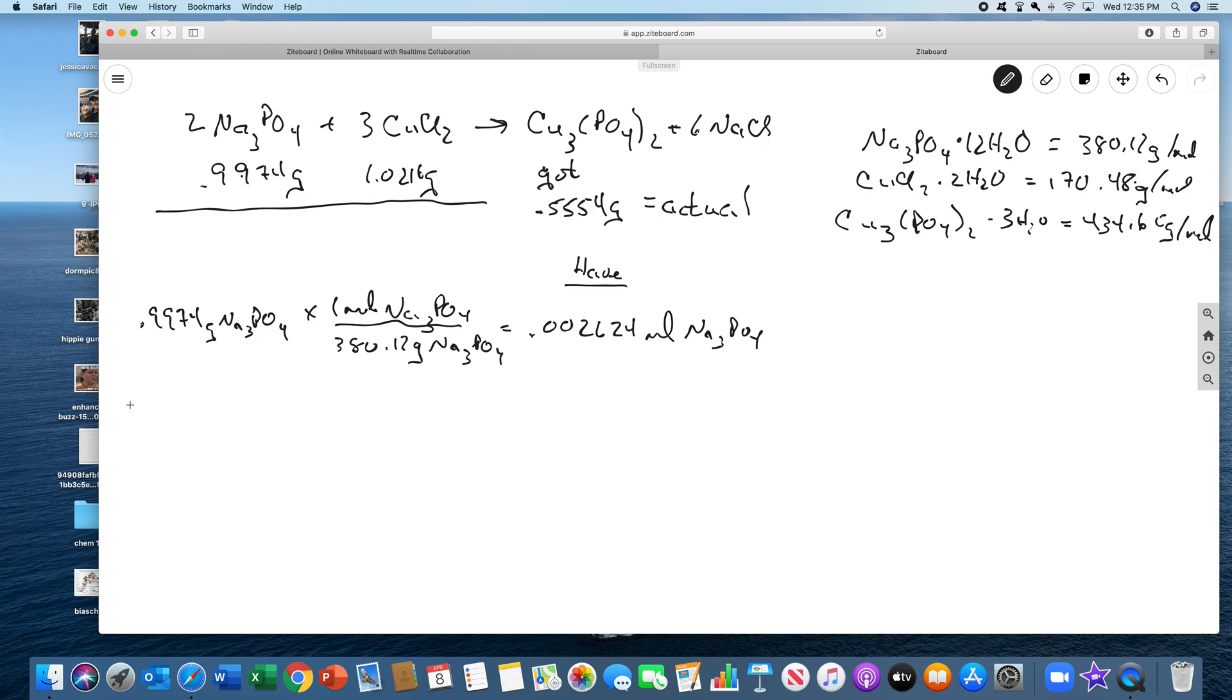Similarly for the copper chloride, we have 1.0216 grams of copper chloride, and we use the molar mass of 170.5, which means that we have 0.005993 moles of the copper chloride.